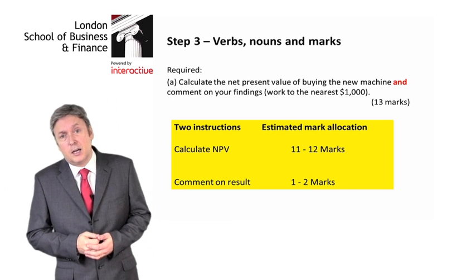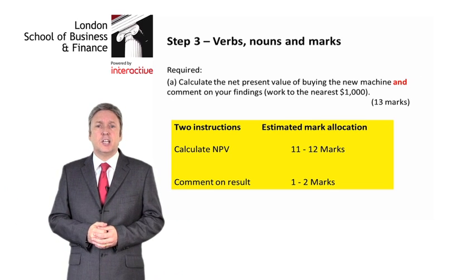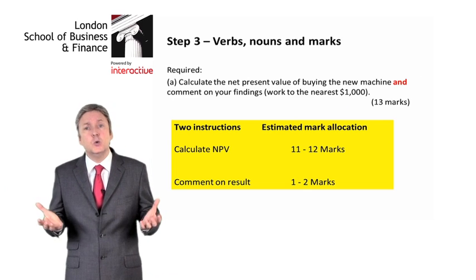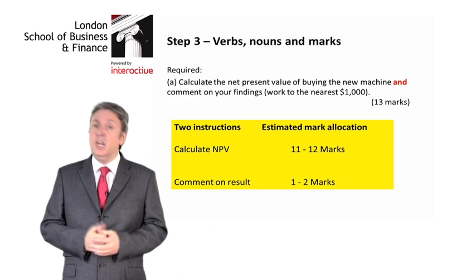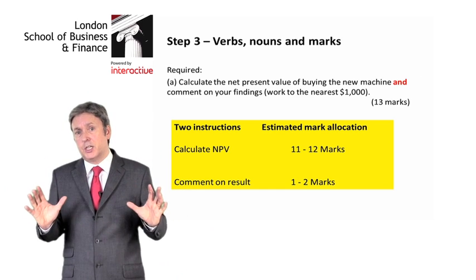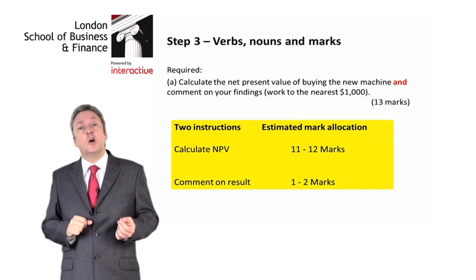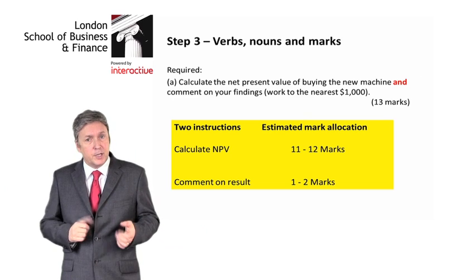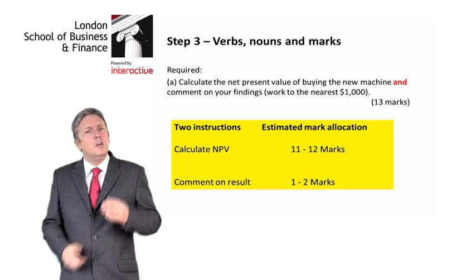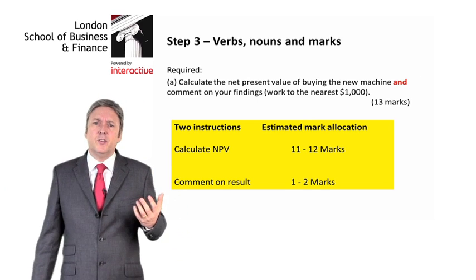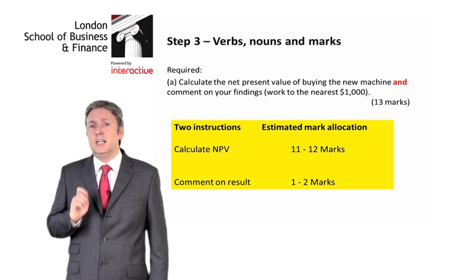The only thing I would highlight here is the word AND. This is critical in the exam because it immediately splits the requirement into two sub-requirements. On the one hand, we have to calculate the NPV — that will be the majority of the marks. But then we will have a couple of marks to comment on the result. It is very common, particularly in F9, that people love the calculation but don't comment, thereby throwing away some very easy marks.